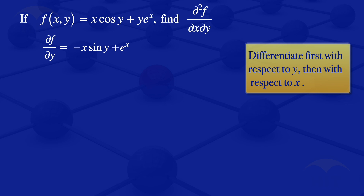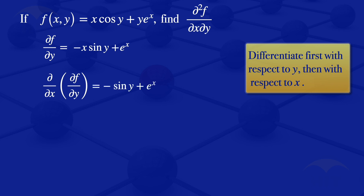We then go on and differentiate with respect to x, taking the partial derivative of f sub y with respect to x. So we are differentiating the expression minus x sine y plus exponent of x with respect to x. Differentiating minus x sine y with respect to x, treating y as a constant, the derivative of minus x gives us minus 1, so we remain with minus sine y. And the other part gives us exponent of x, because the derivative of exponent of x with respect to x is exponent of x. So this second partial derivative gives us minus sine y plus exponent of x.